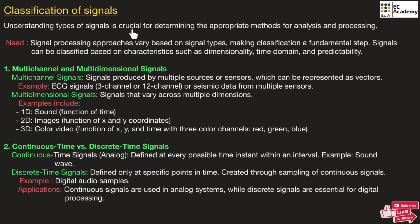Understanding the type of signals is crucial for determining the appropriate methods for analysis and processing. Signal processing approaches vary based on signal type, making classification a fundamental step. The processing of a signal will vary based on the type of signal we use. That is why the classification of signal is very much important and it is the first step in signal processing.